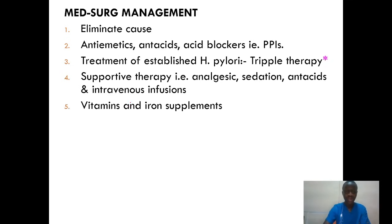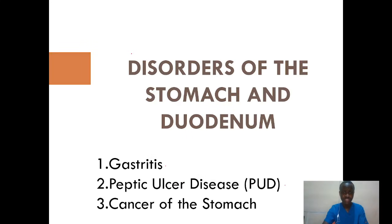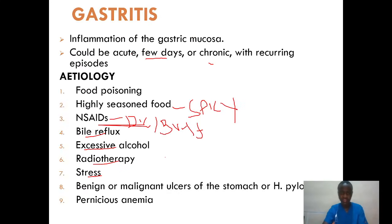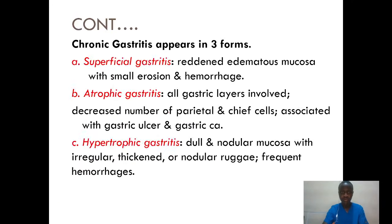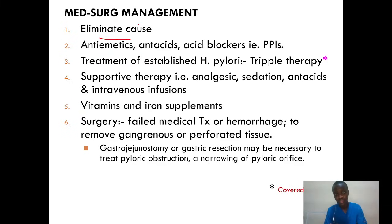Medical surgical management: how will we manage these patients? One, we need to eliminate the cause — the use of NSAIDs, excessive alcohol, stress, food poisoning, highly seasoned food. Eliminating the cause is our first priority. Two, we give antiemetics, as this patient may present with nausea. We give antacids. Three, we also do treatment of established H. pylori. If the H. pylori antigen antibody serology is positive, we start treatment using triple therapy.